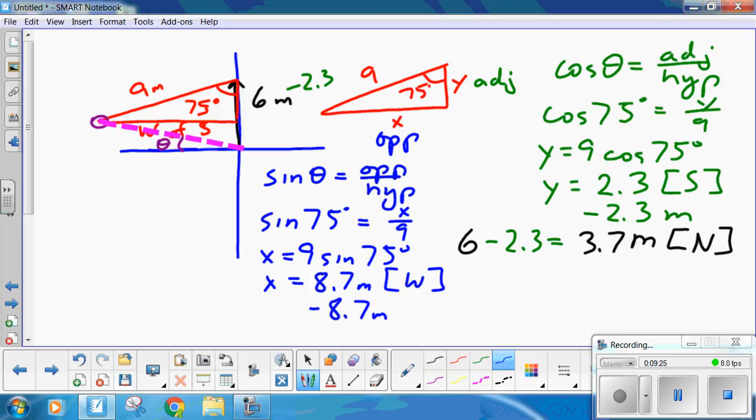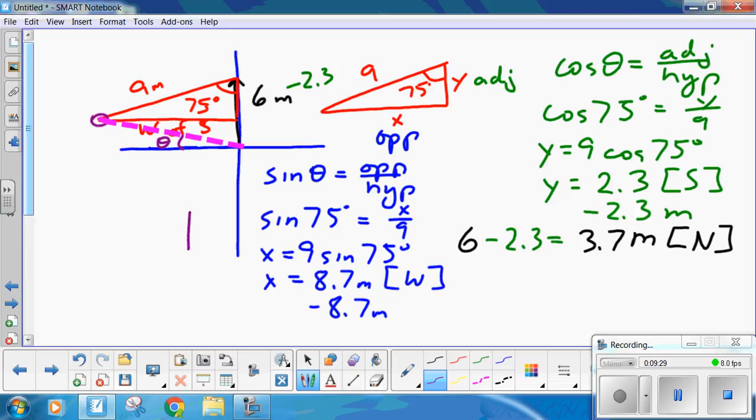Now, so then we look at this, you go up 3.7, and across 8.7. So, what's your resultant? So, now figure that out, pause the recording again, come back, and we'll check your calculations with mine.